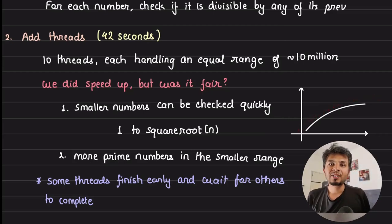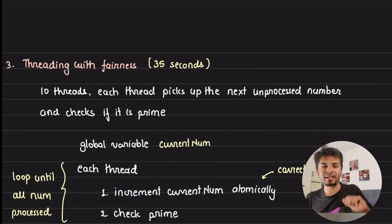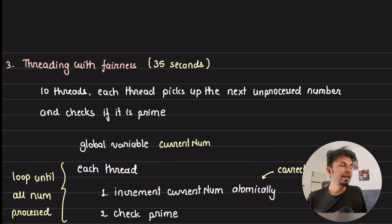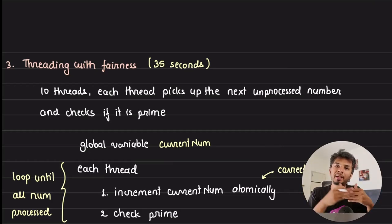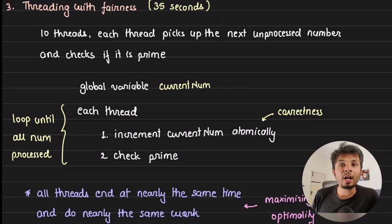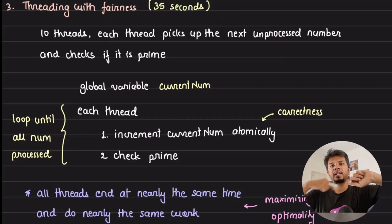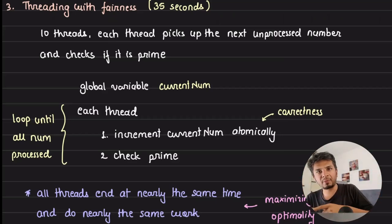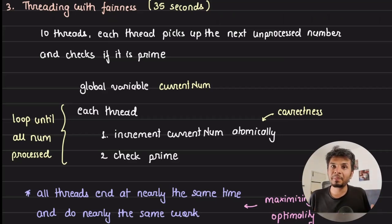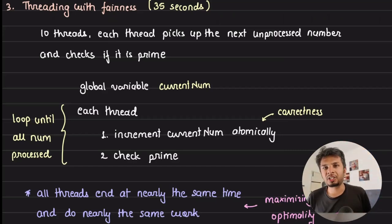Each thread is doing a disproportionate amount of work, so there's scope to make it fair. The third approach: instead of batching the range and giving one batch to each thread, we keep threads running continuously. Whenever a thread is done processing a number, it picks the next number and checks if it's prime. Another thread picks the next, and they continuously do this until we exhaust the entire 100 million range — meaning every thread stays busy until the range is exhausted.